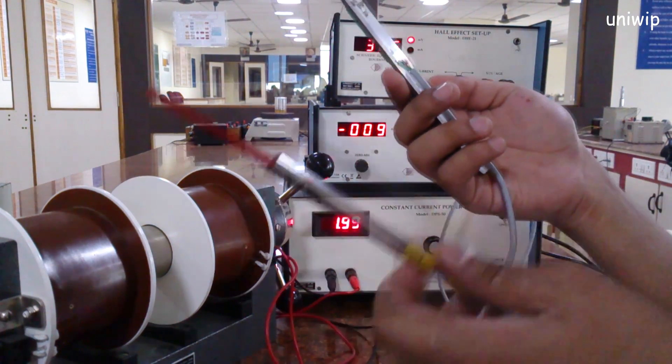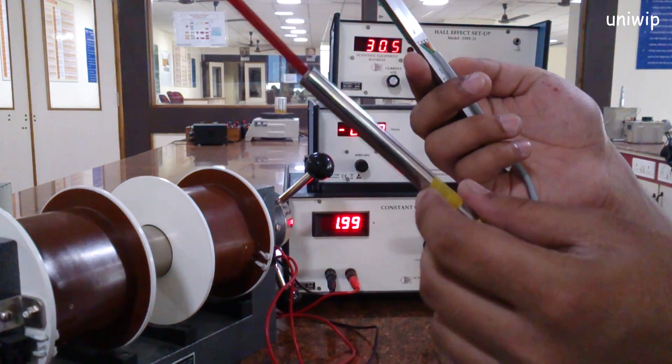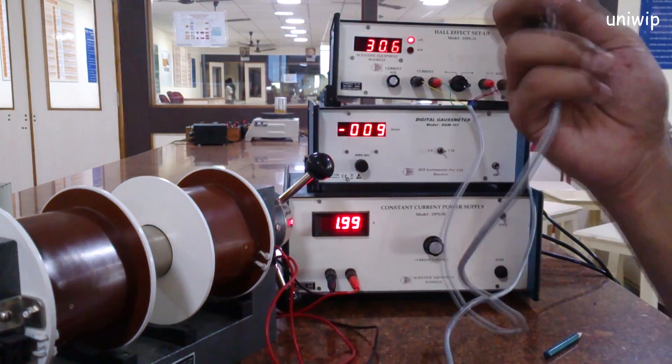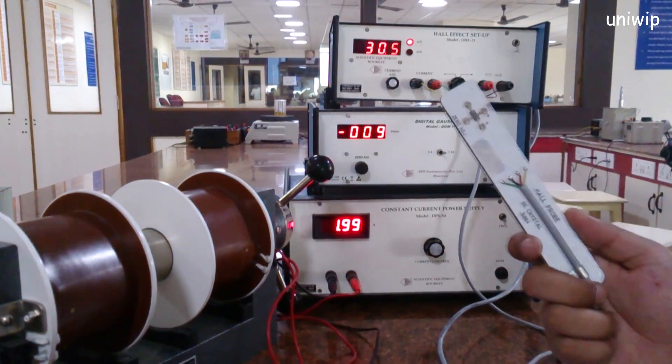In this circuit we have a small germanium semiconductor, this is my Hall probe. I even have another Hall probe to measure the gauss, that is magnetic field strength. This Hall probe will help me measure the resultant voltage, that is the Hall voltage.